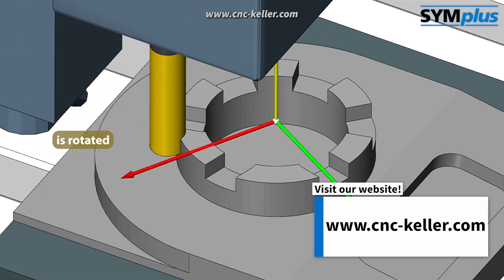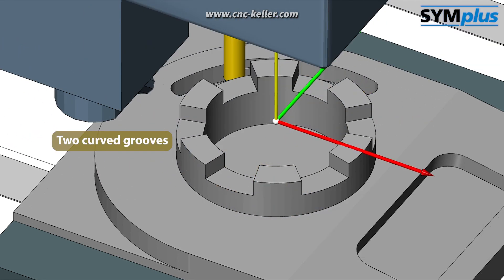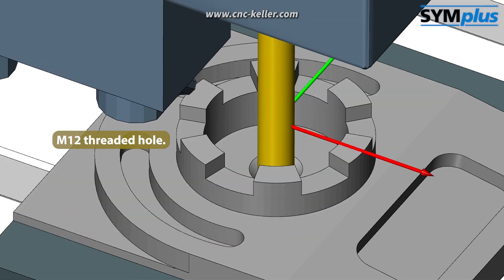Then the ring is rotated incrementally and the program is repeated. Two curved grooves follow around the centre of the tower and an M12 threaded hole.